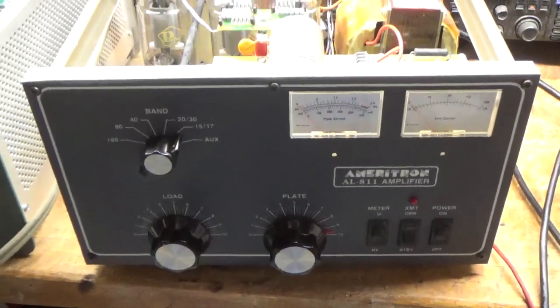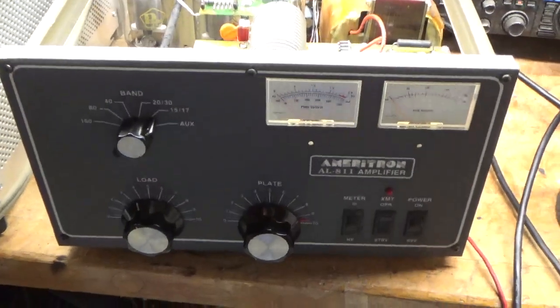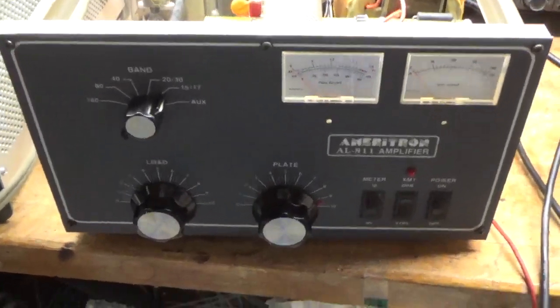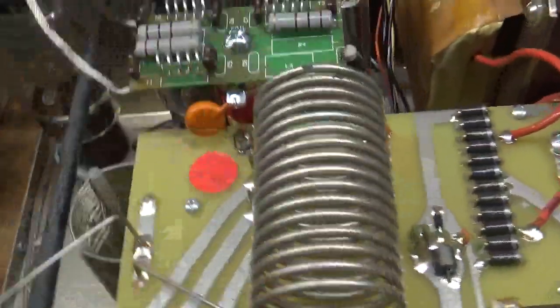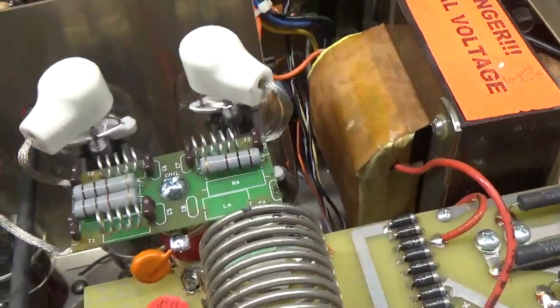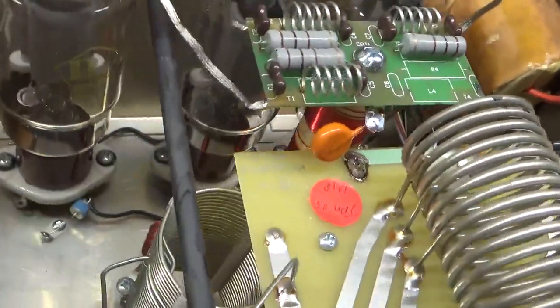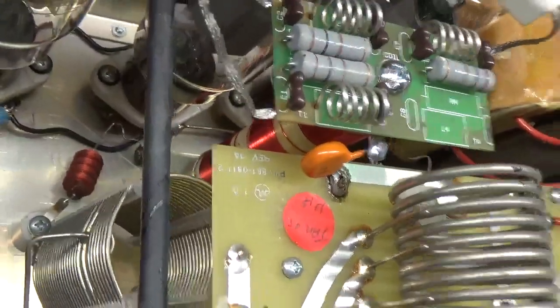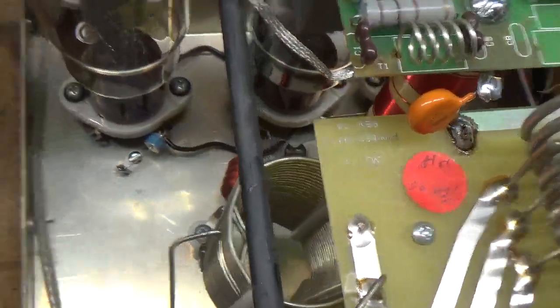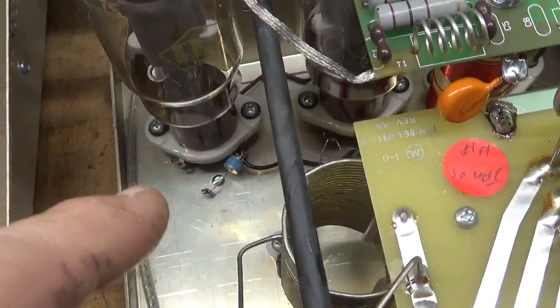Hey, everybody. I'm back with the completed Ameritron AL-811. I went ahead and replaced the straps for the parasitic suppressor board. Replaced the plate choke that was damaged. Put in gas discharge tubes.